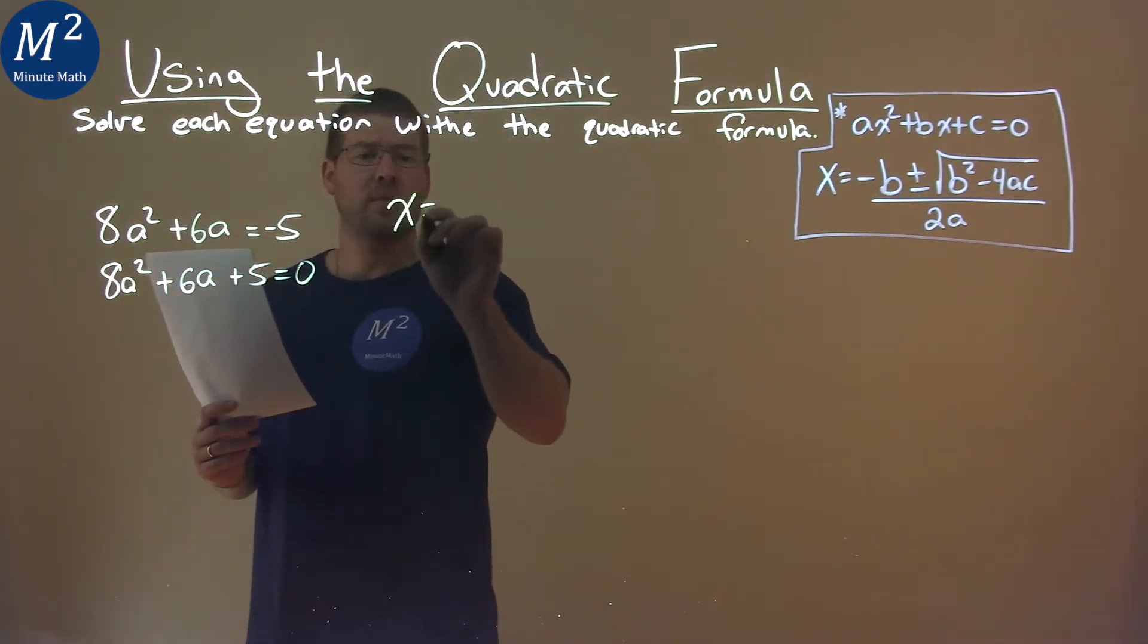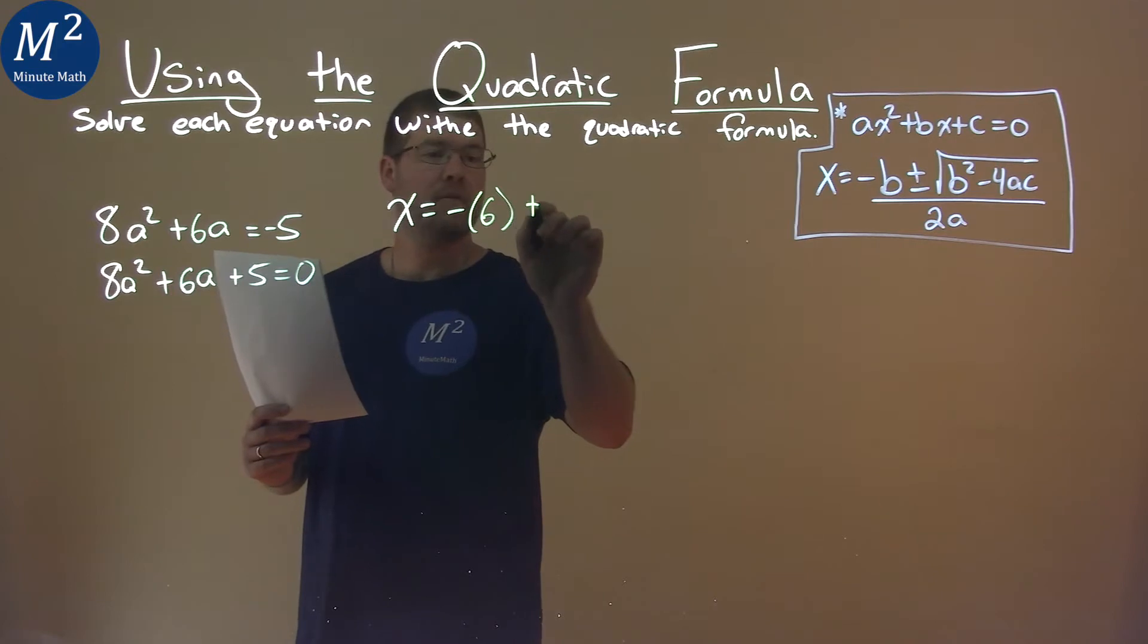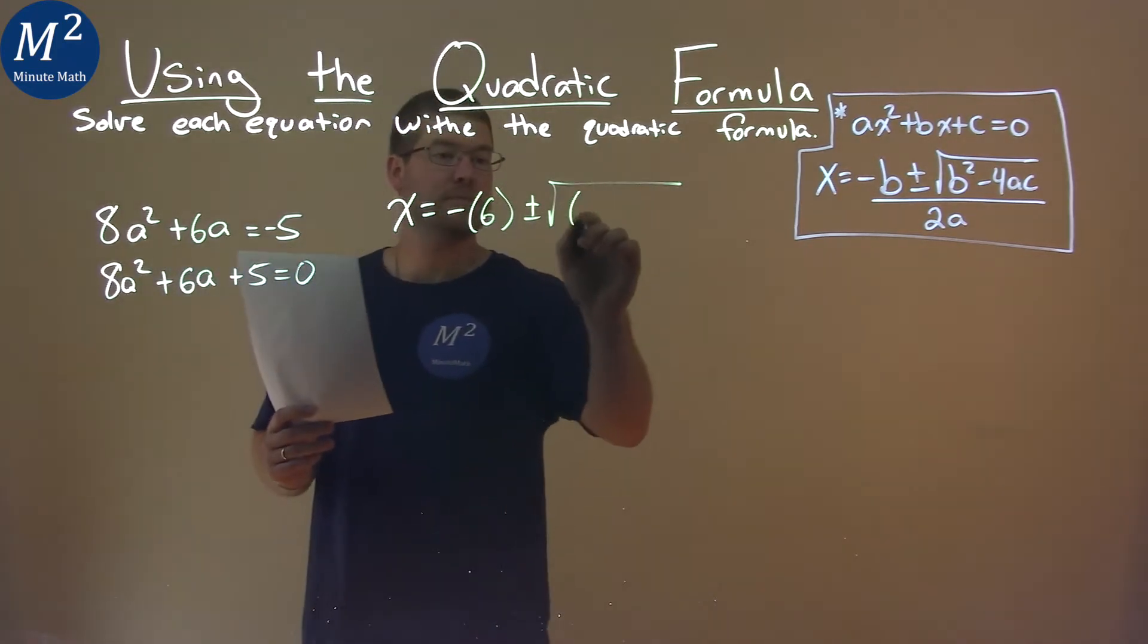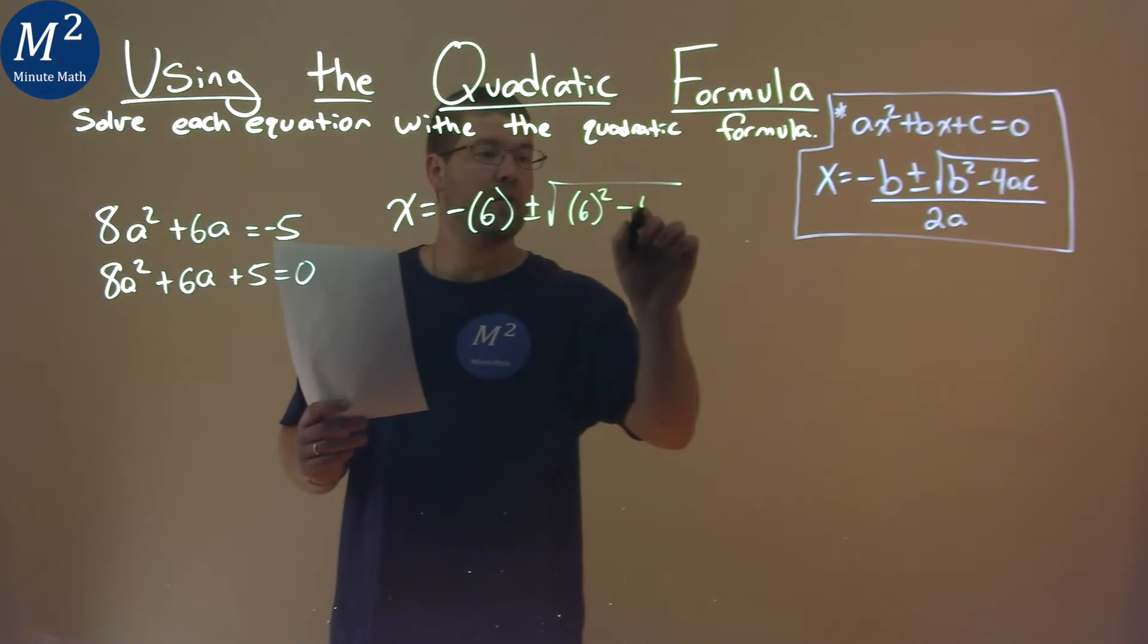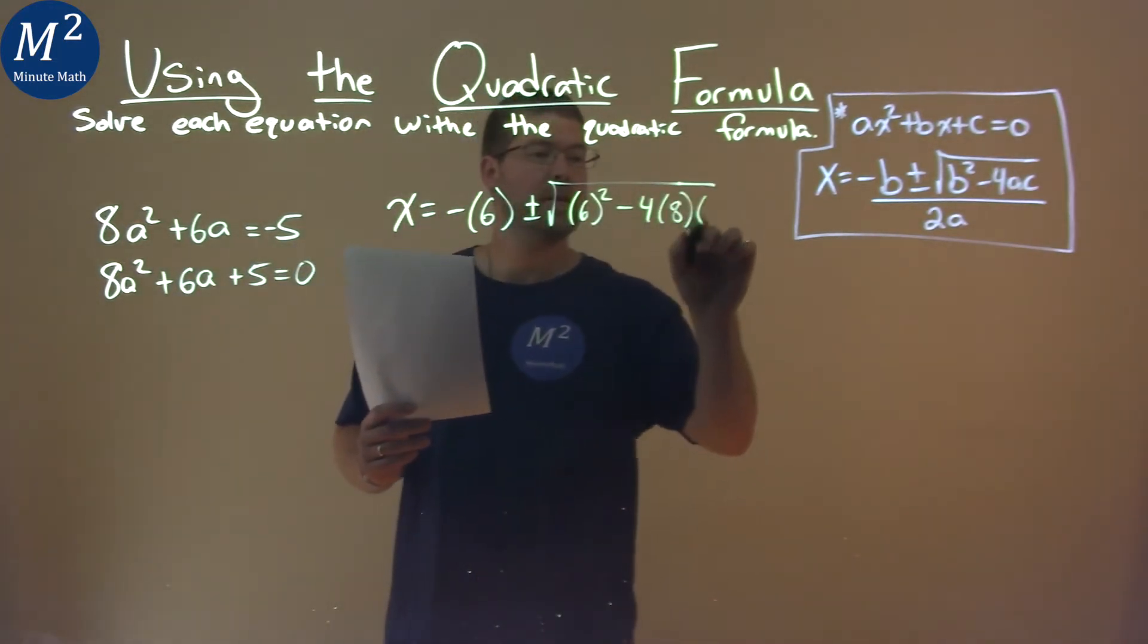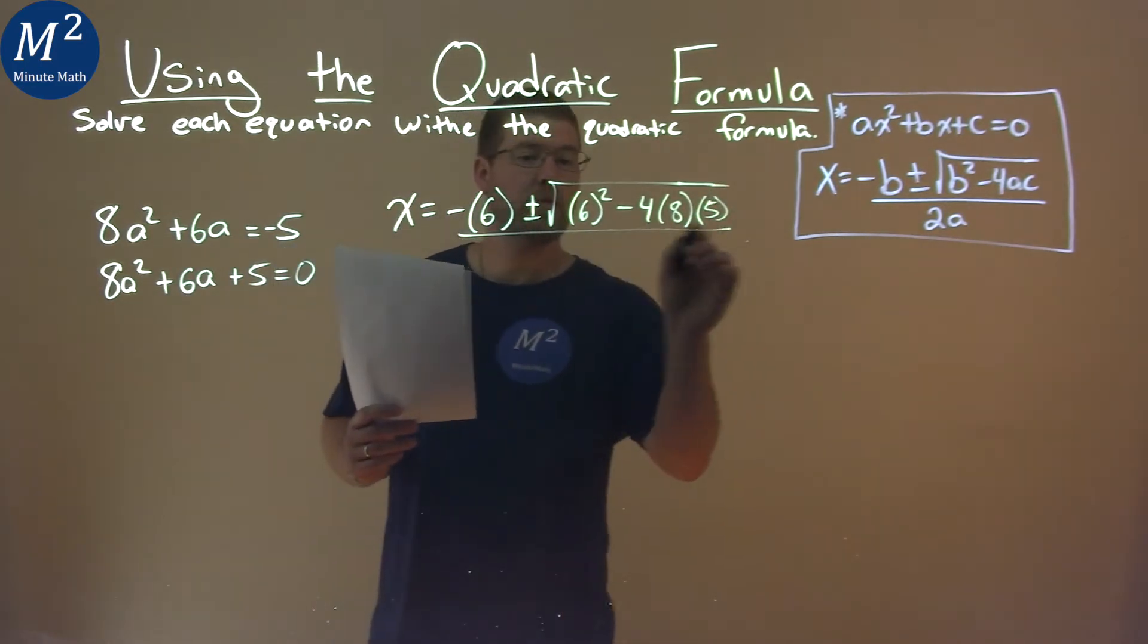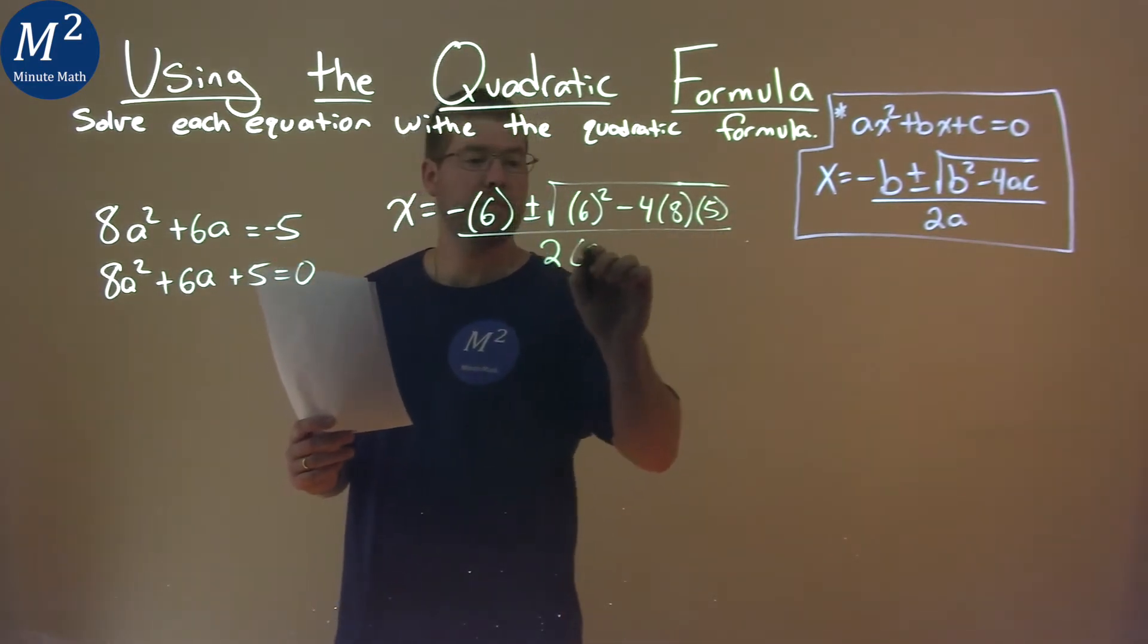So using the quadratic formula, x equals negative b, b value 6, plus or minus the square root of b squared, so 6 squared minus 4 times a, which is 8, times c, which is 5, all over 2 times a, which is 8.